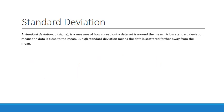A standard deviation, when this is our symbol for it by the way, sigma, is a measure of how spread out a data set is around the mean. A low standard deviation means the data is close to the mean. A high standard deviation means the data is scattered further away from the mean. So a standard deviation of 2.34 means the data range is smaller or more closely grouped than a standard deviation of 4.24.